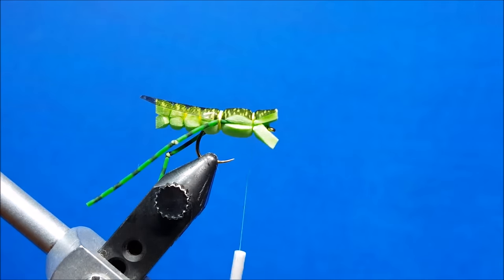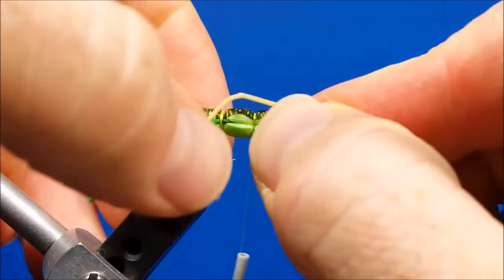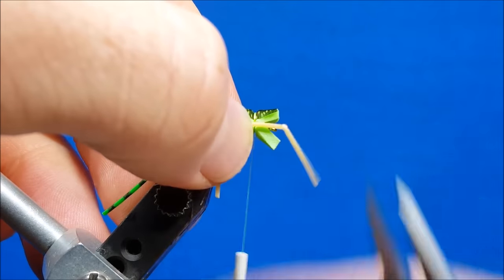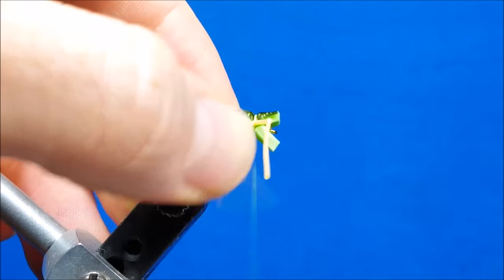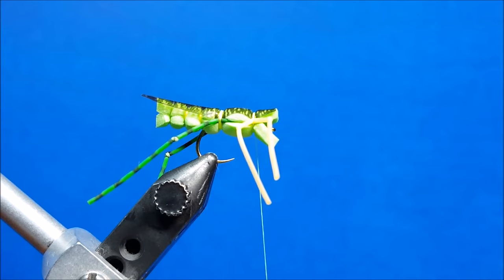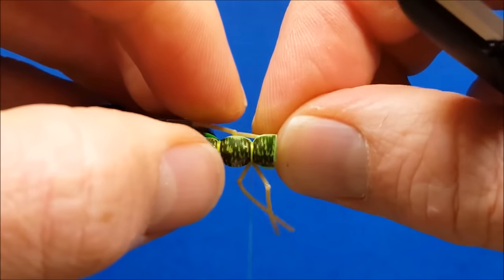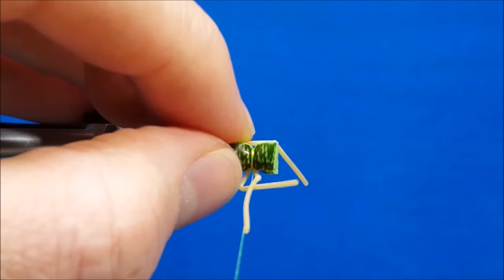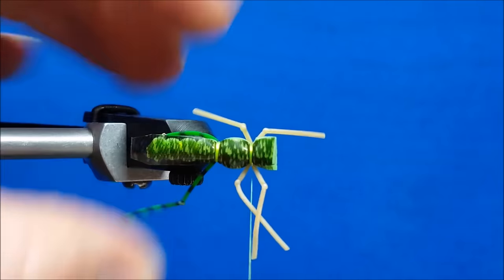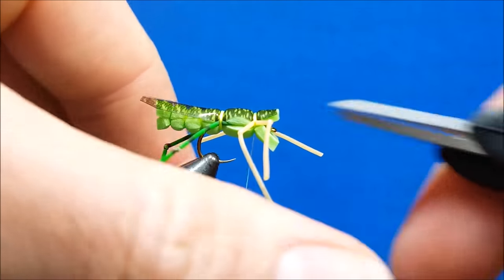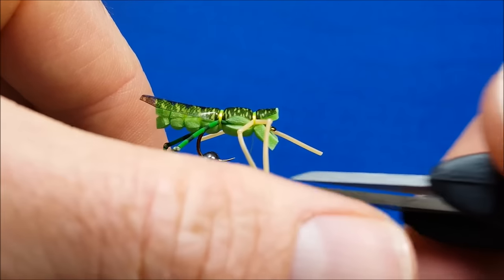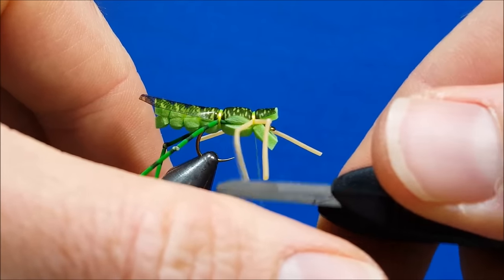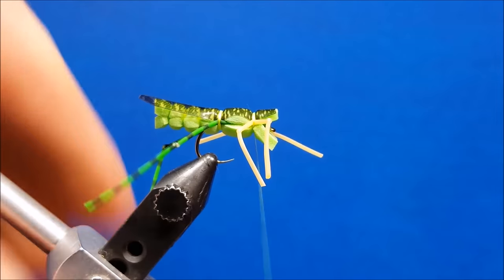On each side there, I'm going to come in and tie in my legs. I've pre-knotted these before. I like to hit the joints with a little UV cure just to hold them in place to keep them from unknotting as they progressively take fish and the teeth and the bites and all that good stuff.